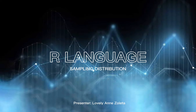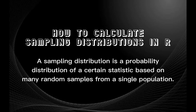How to Calculate Sampling Distribution in R. A sampling distribution is a probability distribution of a certain statistic based on many random samples from a single population.